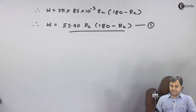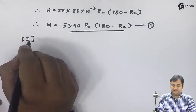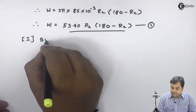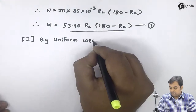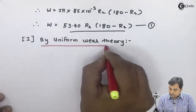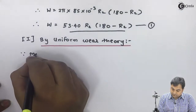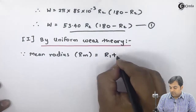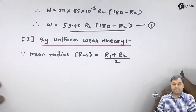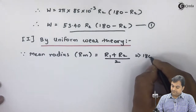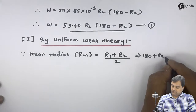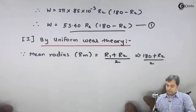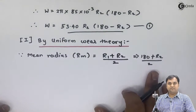I will calculate the mean radius by uniform wear theory, since nothing is specified about which theory to use. By uniform wear theory, mean radius Rm equals R1 plus R2 by 2, therefore Rm equals 180 plus R2 by 2. This is the value of mean radius.